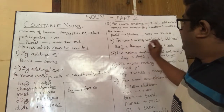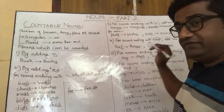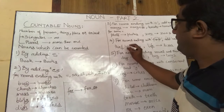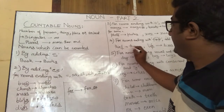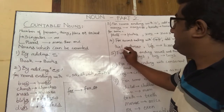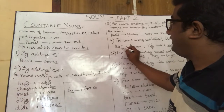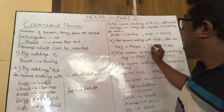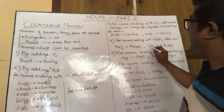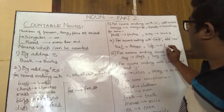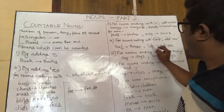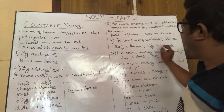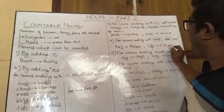There are nouns which end with F or FE — for example, thief or life. We make these into plural form by removing F or FE and adding V-E-S. So thief (T-H-I-E-F) becomes thieves (T-H-I-E-V-E-S), and life becomes lives — we remove FE and replace it with VES.